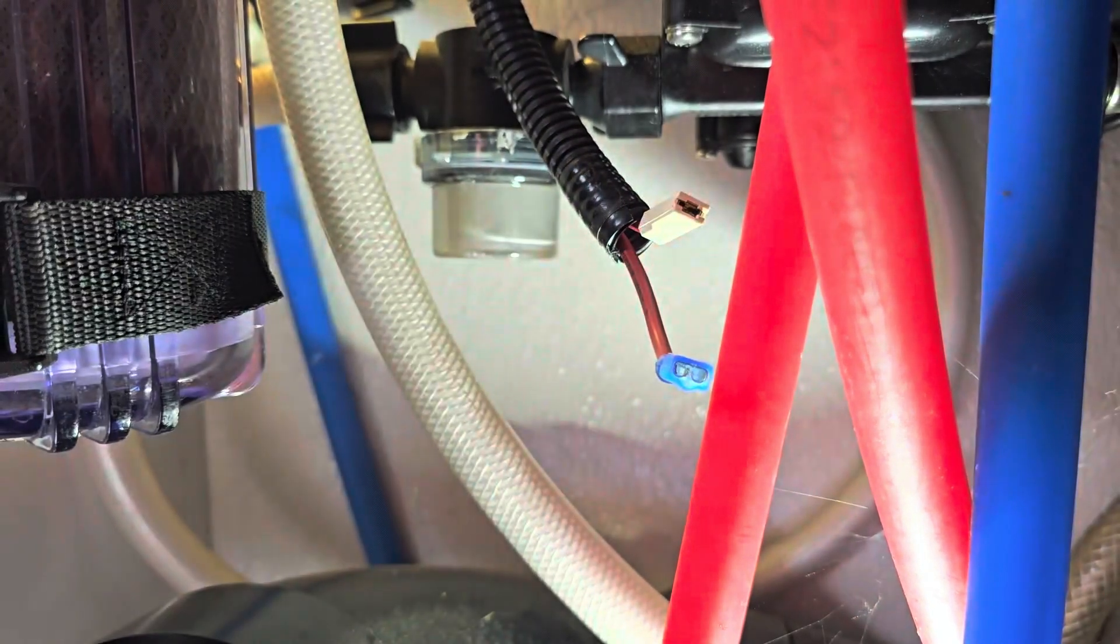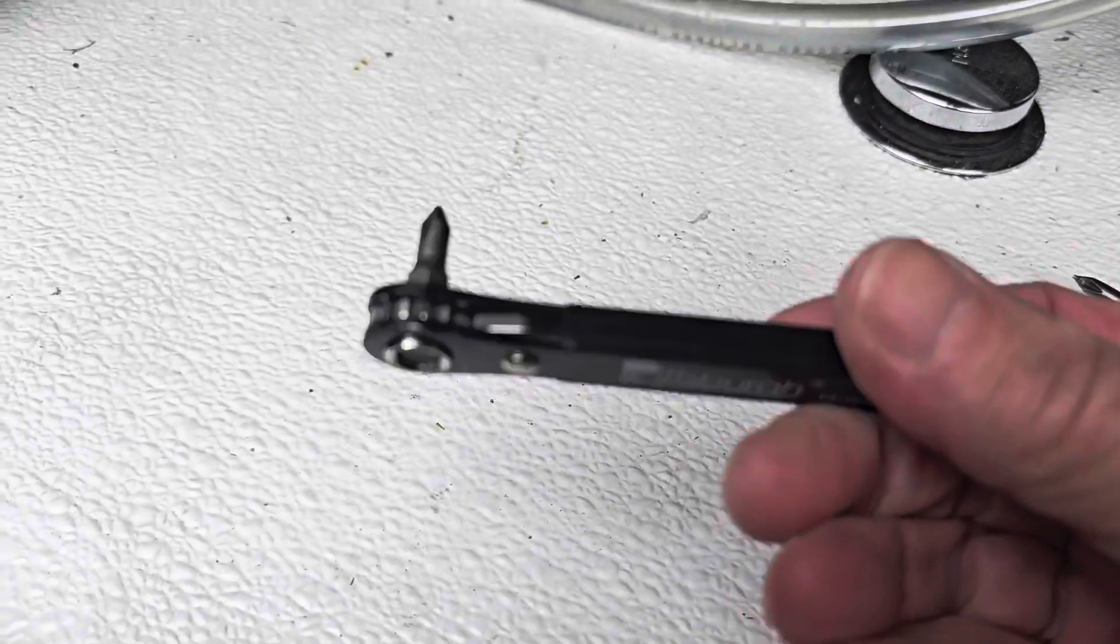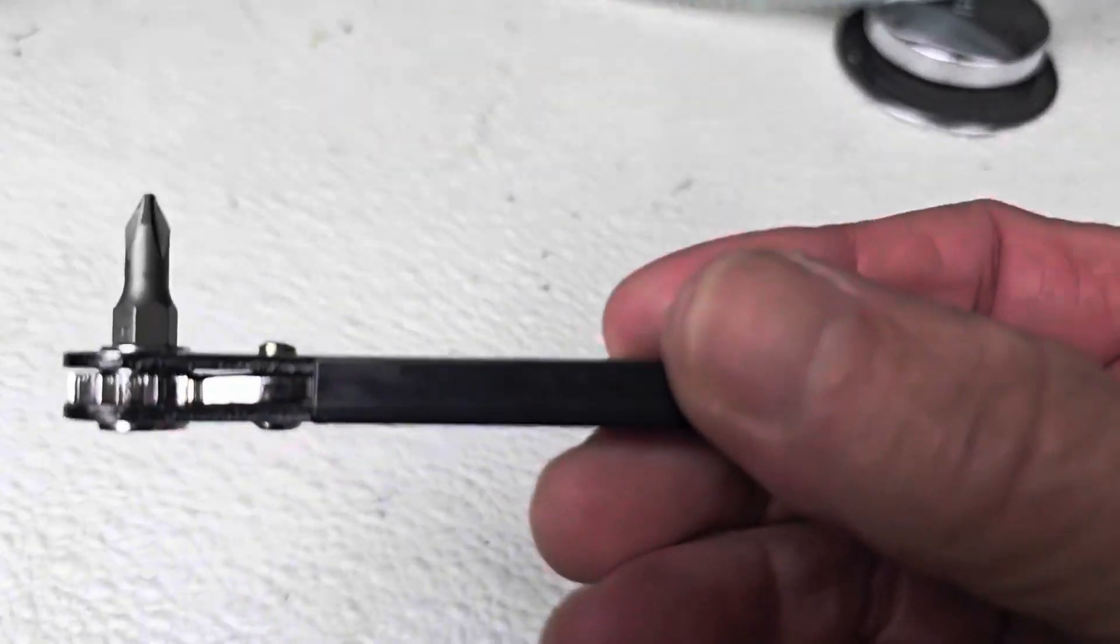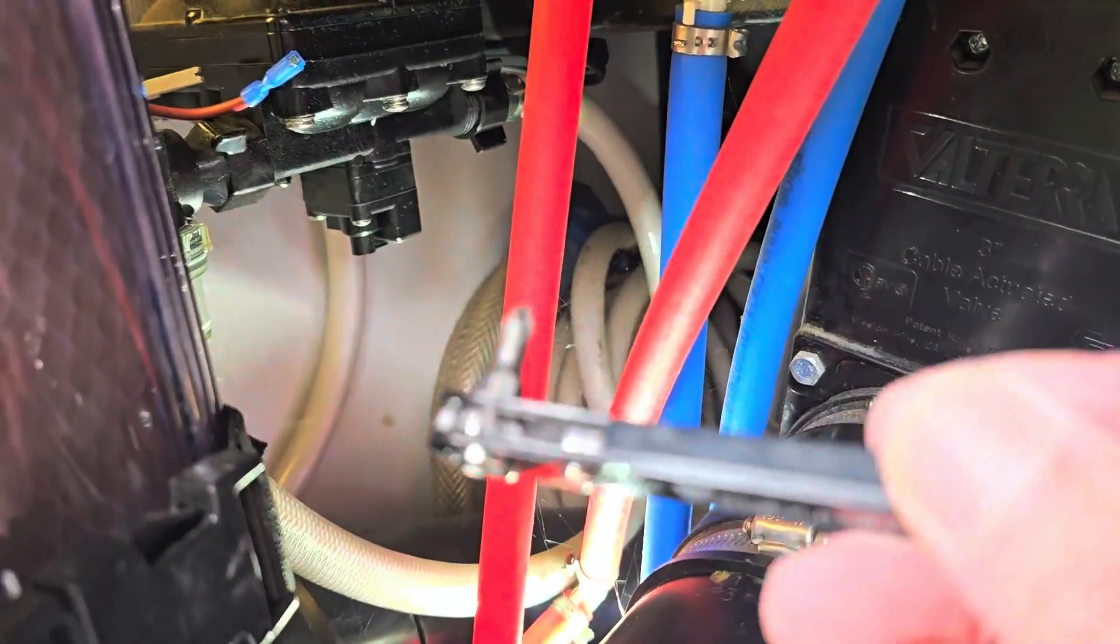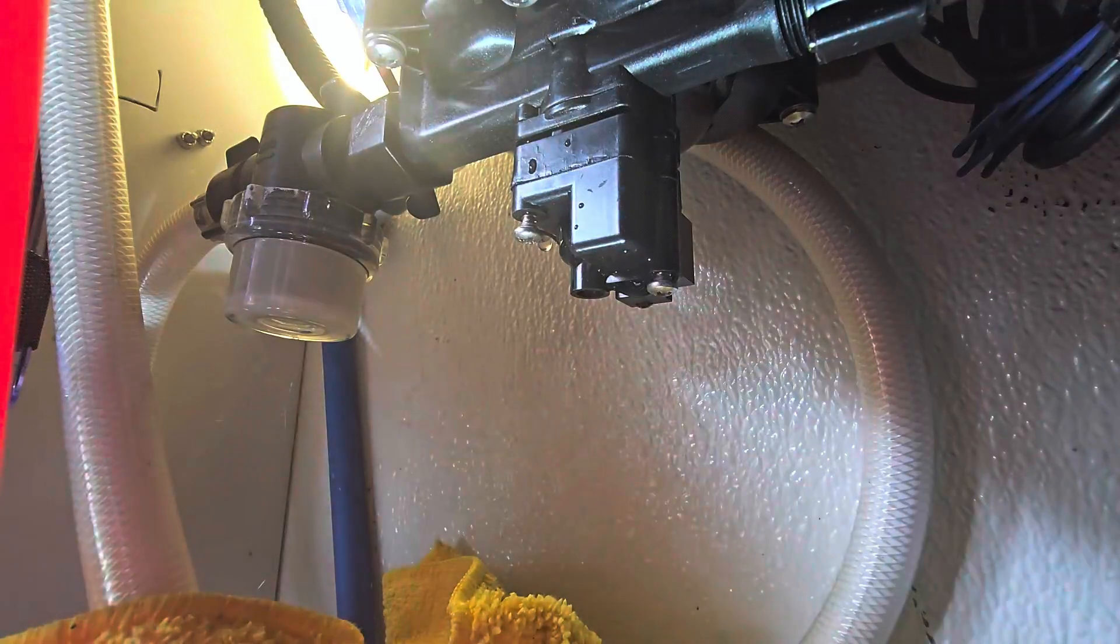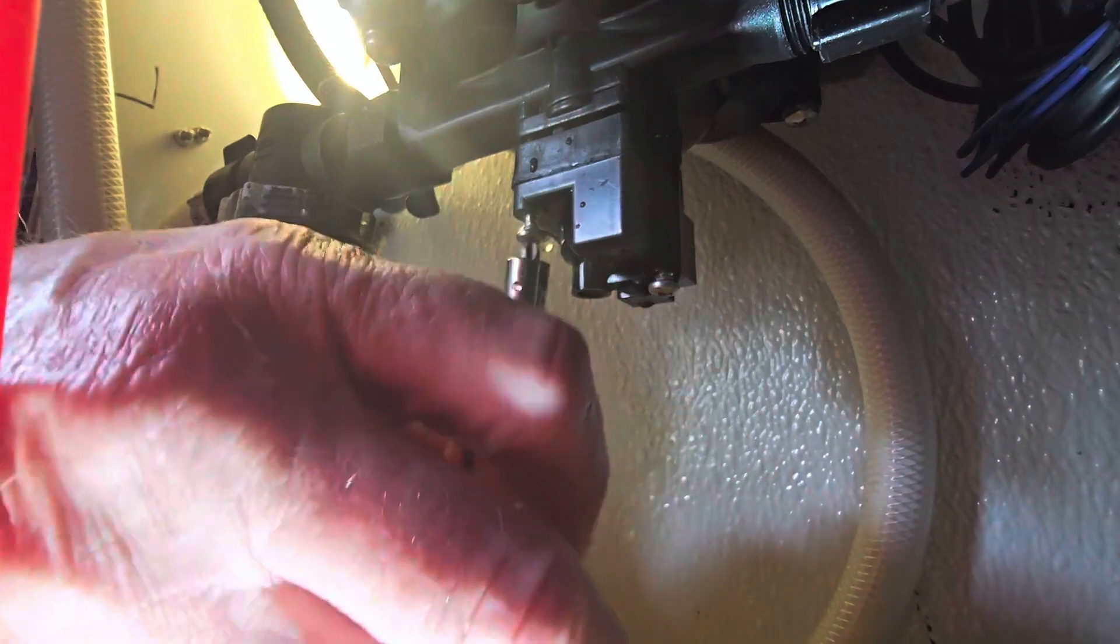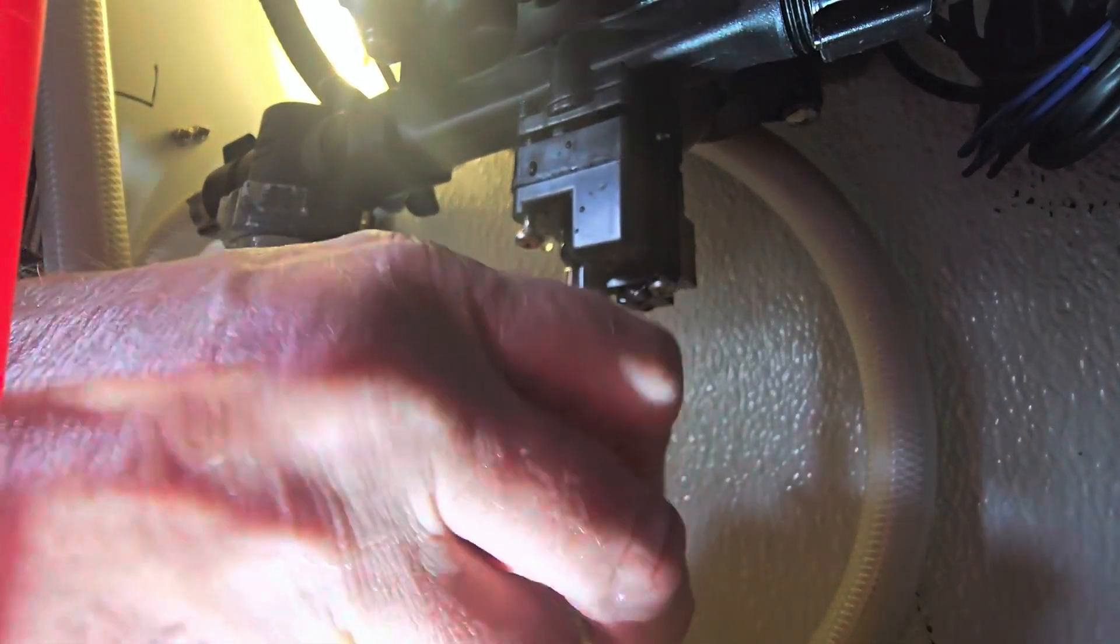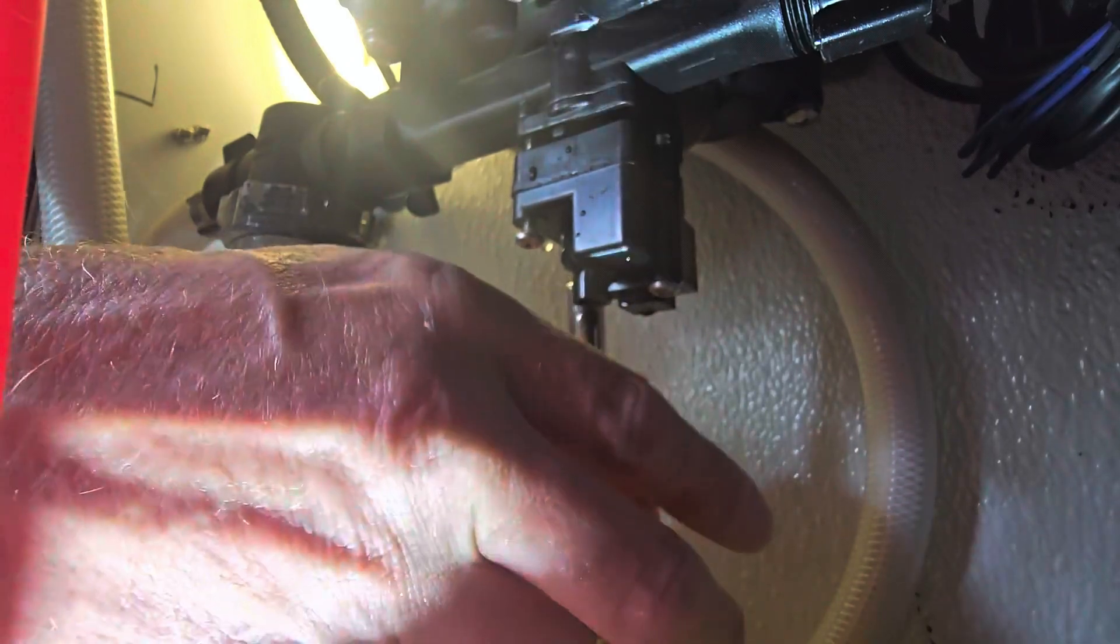I think my handy dandy Harbor Freight right angle screwdriver will probably be easier to use on getting those screws. As you start to loosen the screws it's gonna spew some water, so make sure you have the water turned off and be ready for that. The right angle screwdriver works but actually I found a stubby to be a little easier.